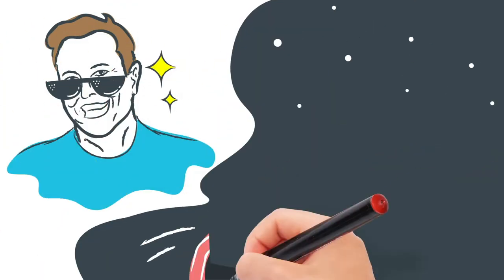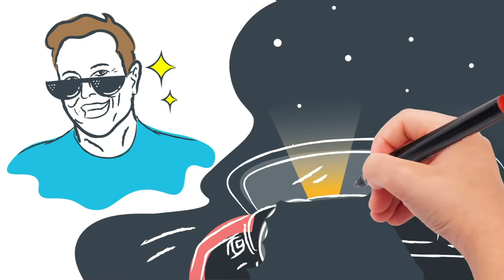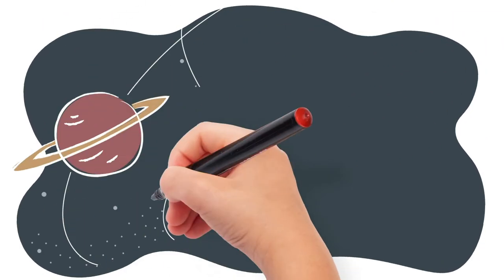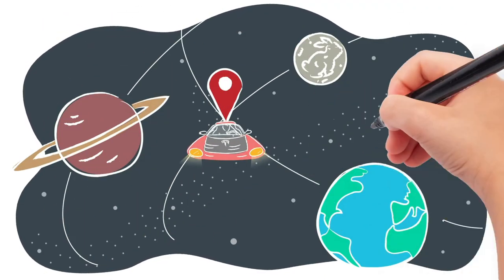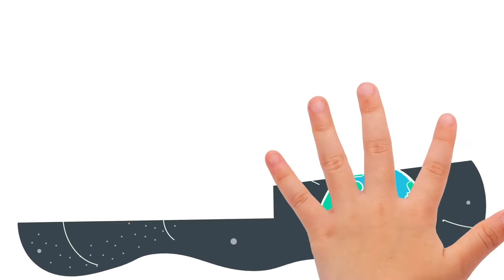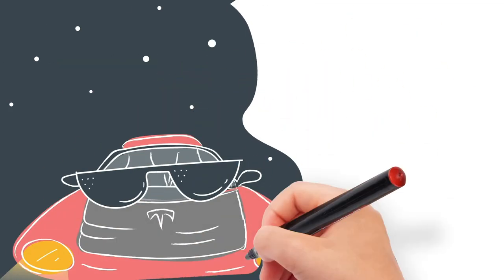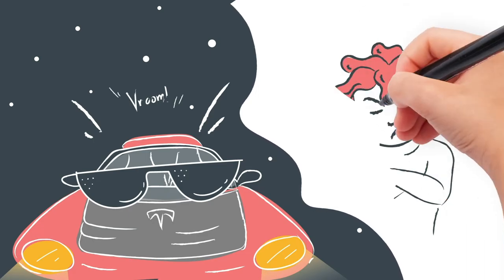Elon Musk sent his own car into space in 2018. There is even a website where you can track where his car is in space right now. I can't believe a car has already been to space and we're still sitting here. No fair!